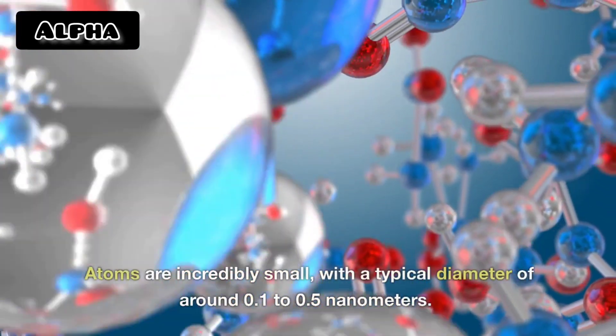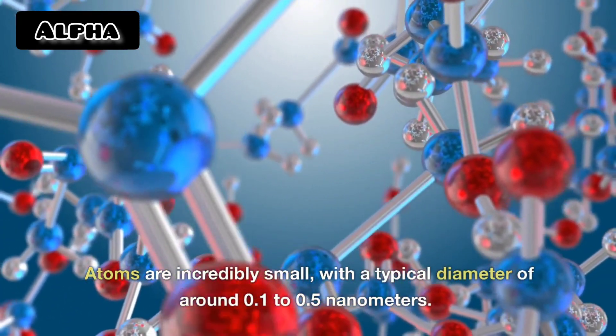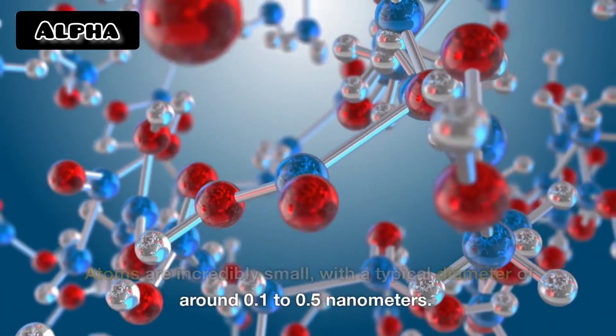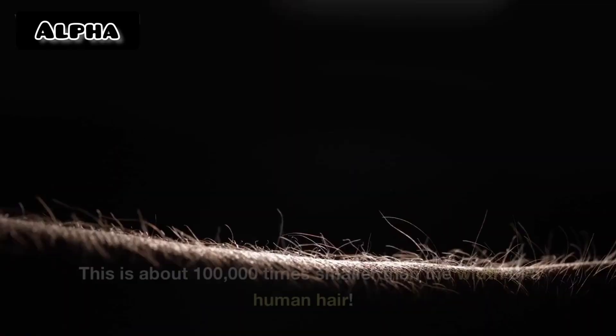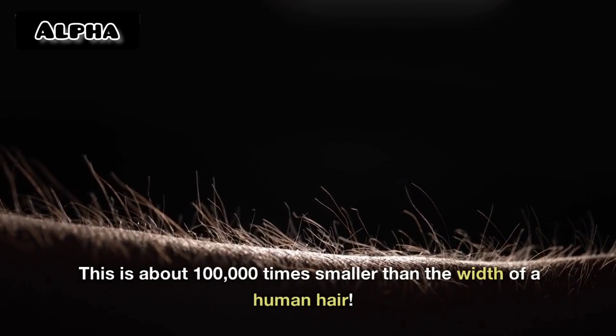Atoms are incredibly small, with a typical diameter of around 0.1 to 0.5 nanometers. This is about 100,000 times smaller than the width of a human hair.